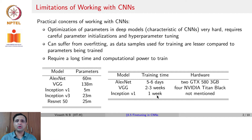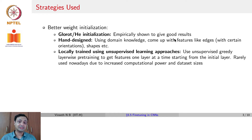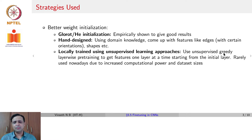So how do we manage doing this for newer tasks and newer domains? Some things you can try are good weight initializations — Glorot or He initialization is one possibility. You can also initialize your CNNs with hand-designed filters, or use unsupervised greedy layer-wise pre-training as another approach that could provide an initialization the network can capitalize on. However, this approach is not used these days due to increased computational power and dataset sizes, as it takes a long time to do greedy layer-wise pre-training just as an initialization method.